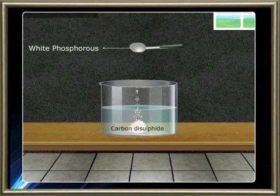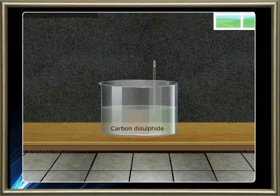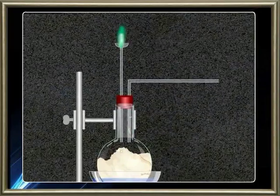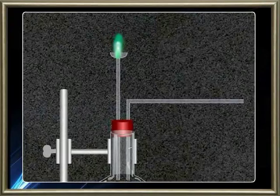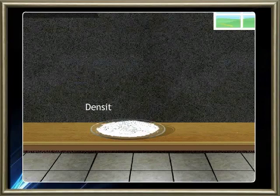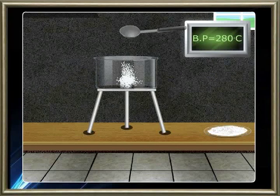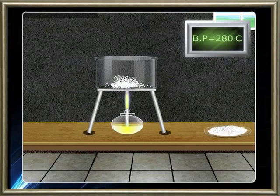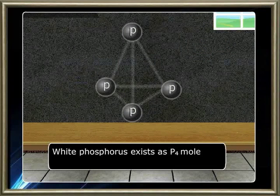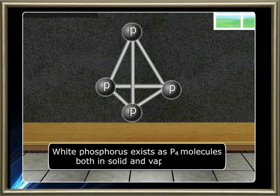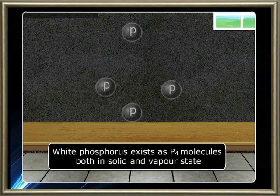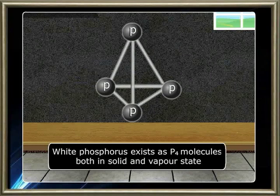White Phosphorus undergoes spontaneous combustion in air and produces a greenish glow. The density of White Phosphorus is 1.2 grams per centimeter cube. The boiling point of White Phosphorus is 280 degrees Celsius. White Phosphorus exists as a P4 molecule in both solid and vapor state. The 4 atoms in the P4 molecule occupy the corners of a regular tetrahedron.